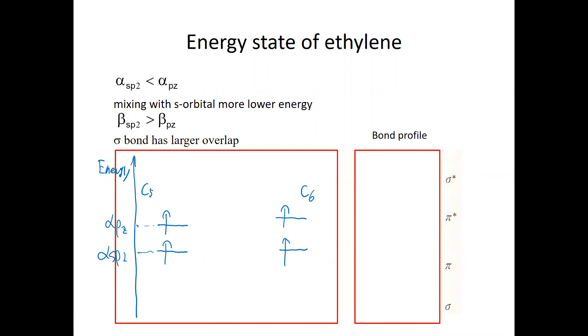And for the sigma bond, due to the sp2 orbital, the overlap is larger. So can make like this. However, the pz orbitals originally higher than sp2, but the overlap is smaller. So meaning that this overlap is kind of a little bit smaller.